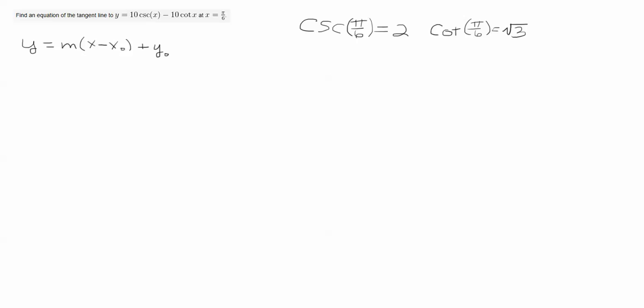So since I need the equation of a line, I'm going to write down the equation of a line. And I'm going to need to know what the cosecant and cotangent at pi over 6 are. So I'm just going to write those down for reference.